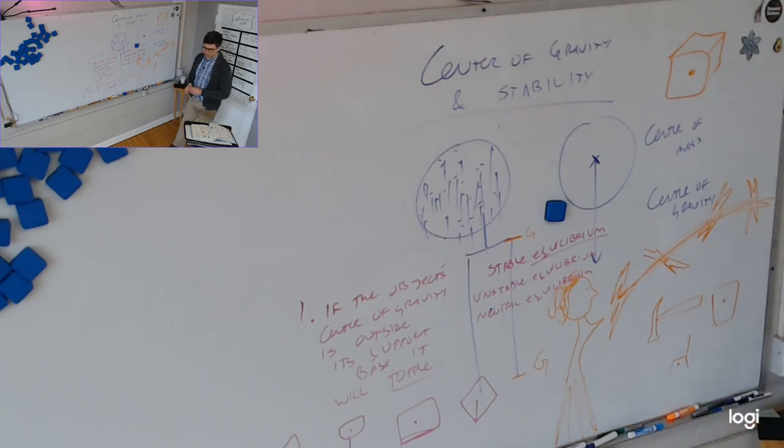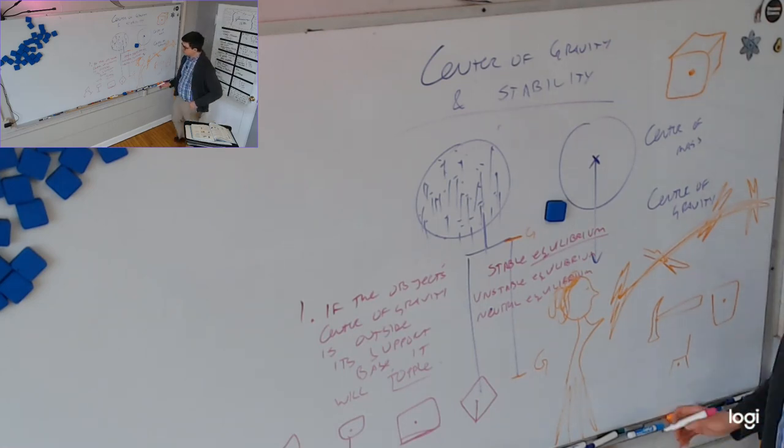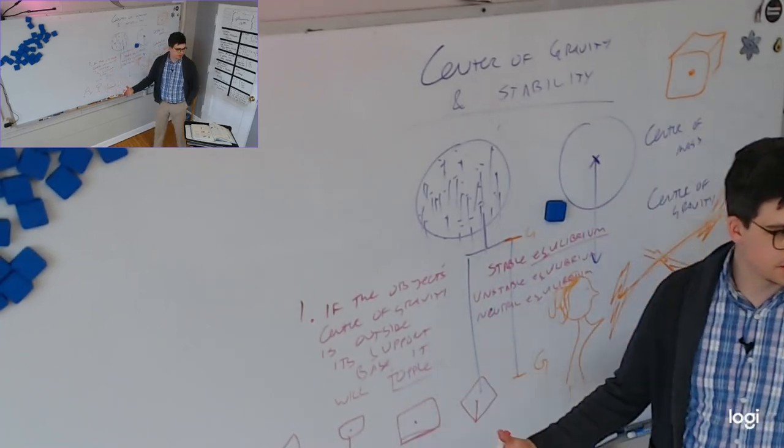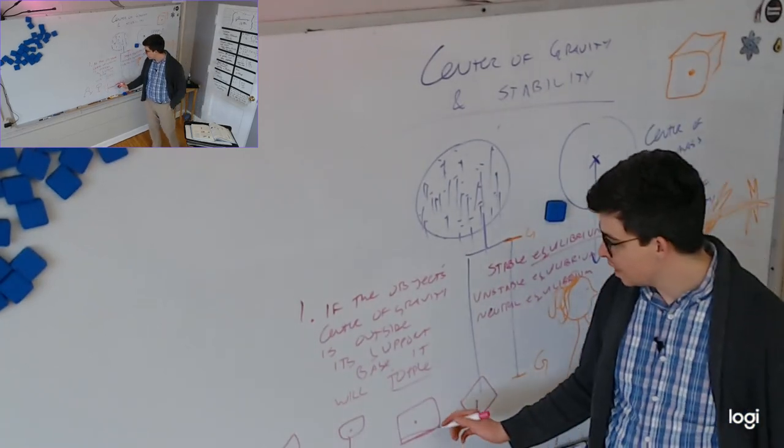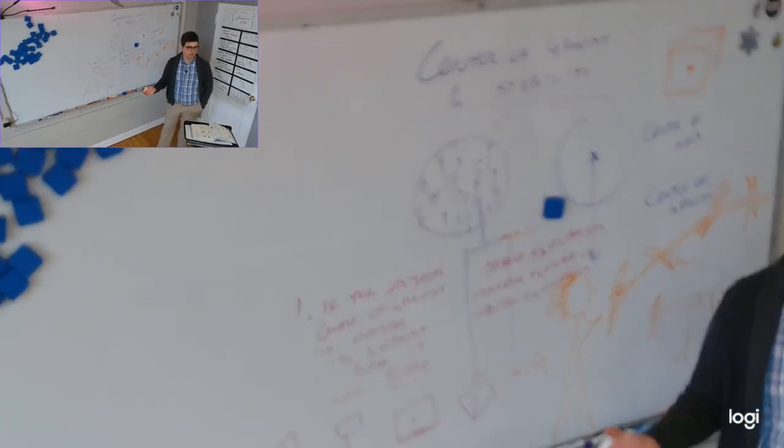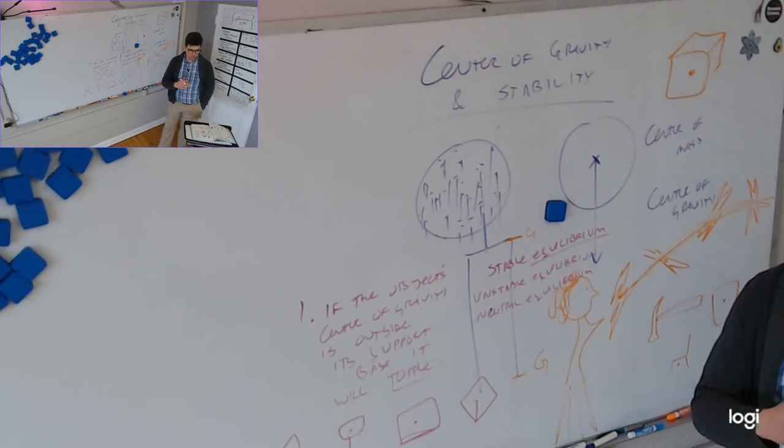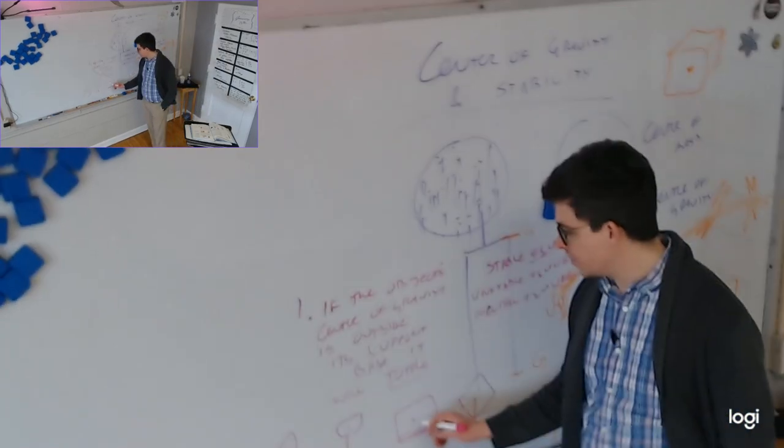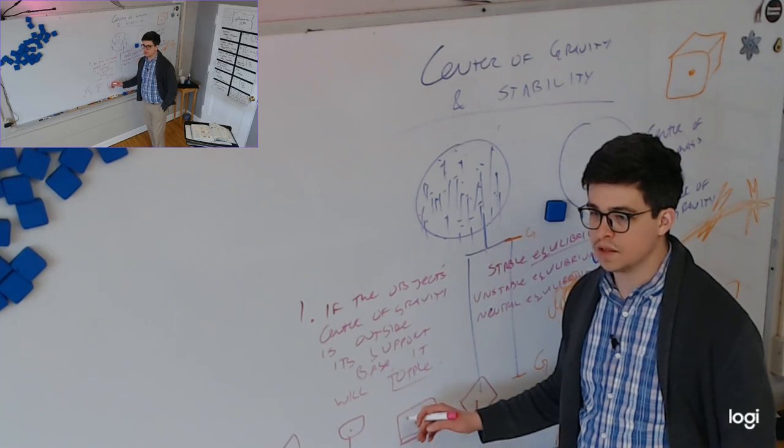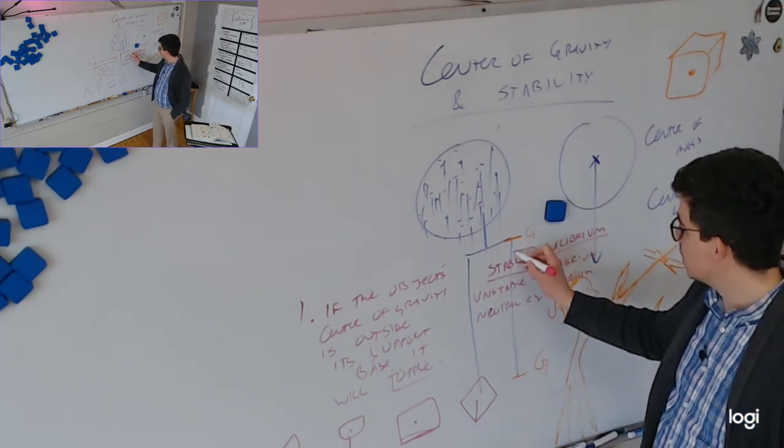And it can be in neutral equilibrium. These are, yeah, states of stability. You could call it that, yeah. Or states of equilibrium might be better. And the rule of thumb is if we shift an object, if we translate an object geometrically, if the center of gravity or center of mass, they're the same for this, if the center of gravity or center of mass has to move up, then that is in stable equilibrium.